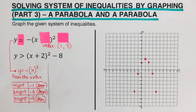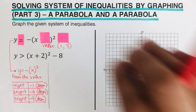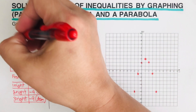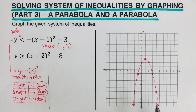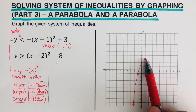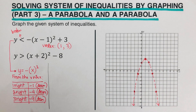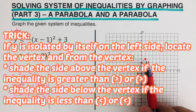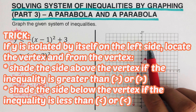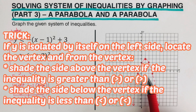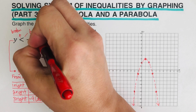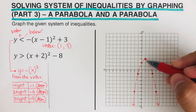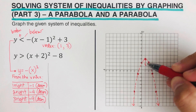Now we determine if we are going to use a solid line or a broken line. Looking at this first inequality, there is no bar underneath, so we are using a broken graph. Now we shade: the trick is if Y is isolated on the left side, locate the vertex. Shade above the vertex if it's greater than or greater than or equal to; shade below the vertex if it's less than or less than or equal to. In this problem we have a less than, so we are shading below the vertex.